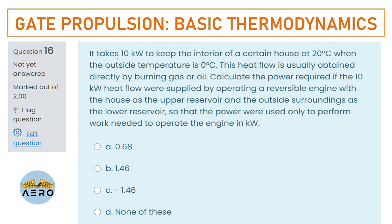It takes 10 kW to keep the interior of a house at 20°C when the outside temperature is 0°C. The heat flow is usually obtained directly by burning gas or oil. Calculate the power required if the 10 kW heat flow is supplied by operating a reversible engine.